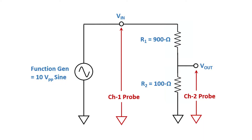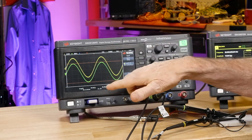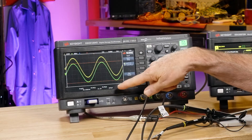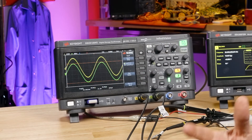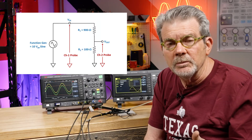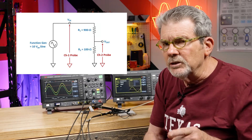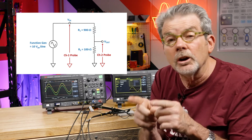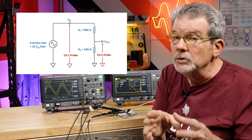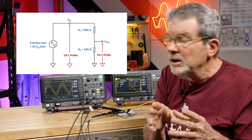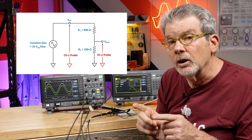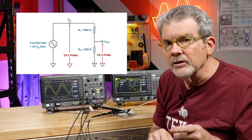Now we're back to our resistive divider circuit, looking at the input signal across R1 and R2 — that's the yellow waveform, measuring about 10 volts — and the output across R2, measuring 980 millivolts, about 1 volt. Both are pretty much what we expect. Remember in earlier lessons when we talked about passive probes, I said we couldn't directly measure the voltage across R1. You can if you use a differential active probe, but we can also determine the voltage drop across R1 using waveform math.